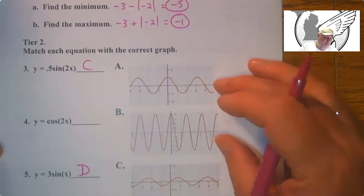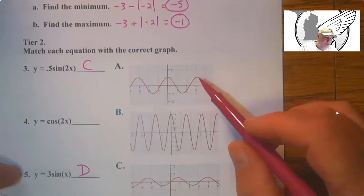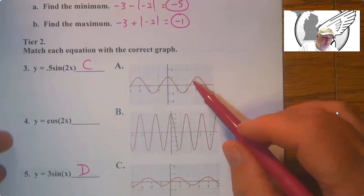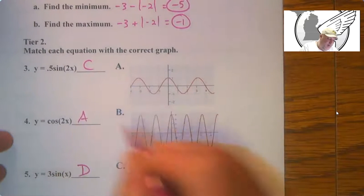And the other two are cosine graphs. And so we've got an amplitude of 1 for A. And so this has an amplitude of 1. So A is going to go here.